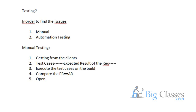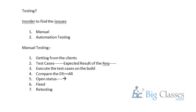The bug status in the bug tracking tool starts as 'open'. Once the developer fixes it, they change the status to 'fixed'. After that, we perform retesting — we verify whether the specific bug is still reproducible or not.